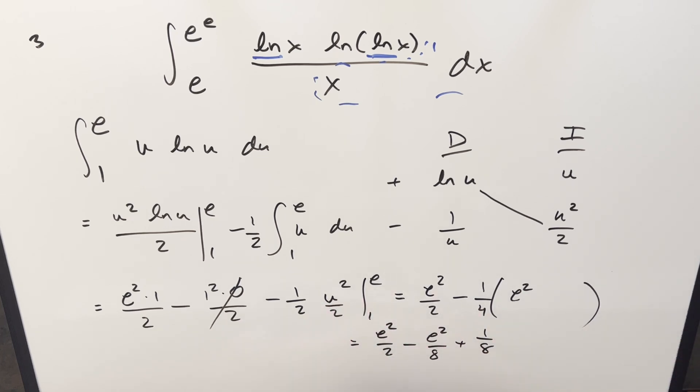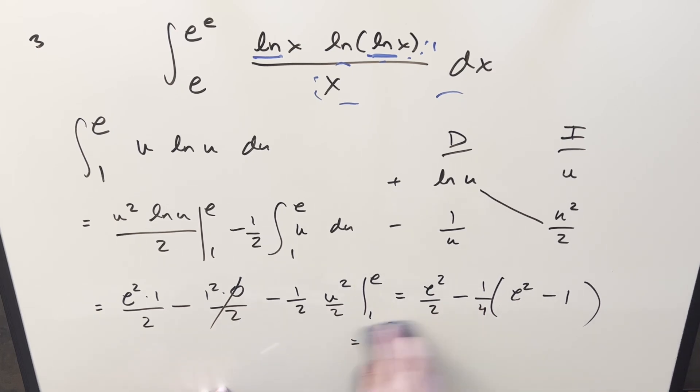So this is just minus 1 fourth, and then we're just looking at u² here. So you plug this into u², you get e² minus 1², which is just 1. Let's forget all this stuff that we did here and rewrite this.